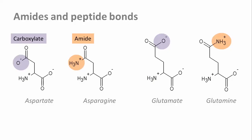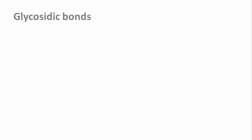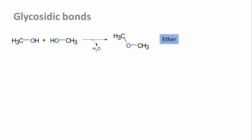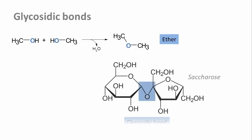The last type of bond is one we'll only look at briefly and come back to later in the lecture on carbohydrates. When two hydroxyl groups are joined by condensation, we get an ether. True ethers are not very common in biomolecules, but one very important bond type looks like an ether: the glycosidic bond between sugar molecules.